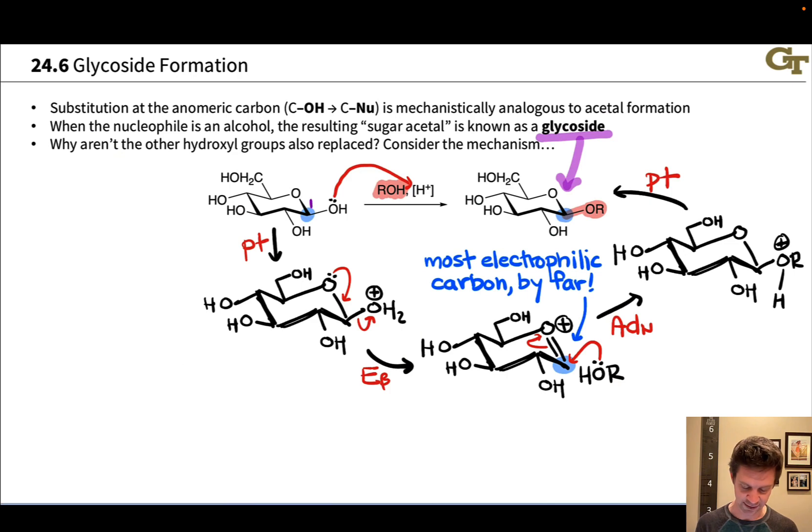Then the alcohol adds in a nucleophilic addition step to that cation. And finally, we lose a proton from the cation to give the neutral glycoside product. So this is one way to think about this.